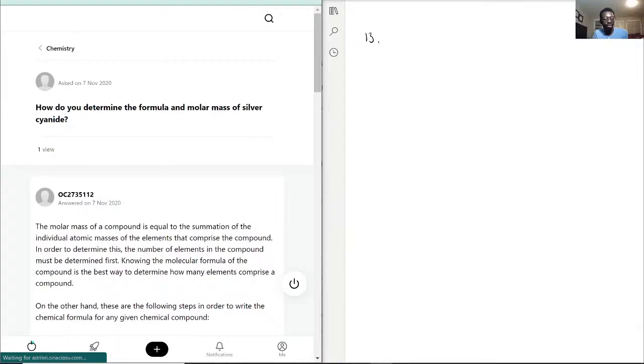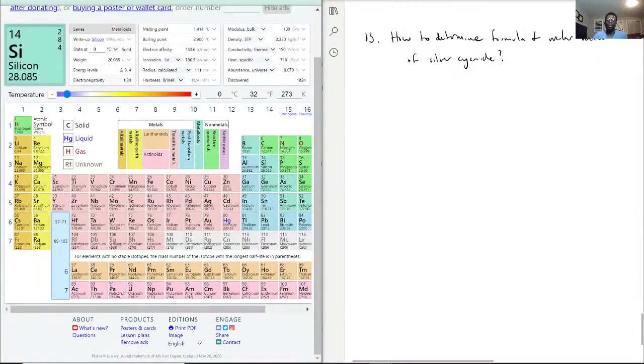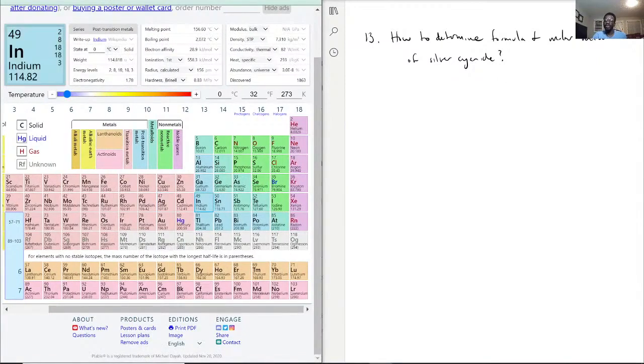So how do you determine the formula and molar mass of silver cyanide? That is honestly a great question. First, we need to figure out what silver cyanide is made of.